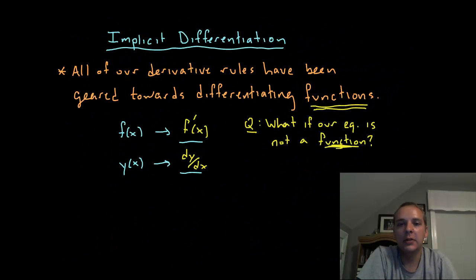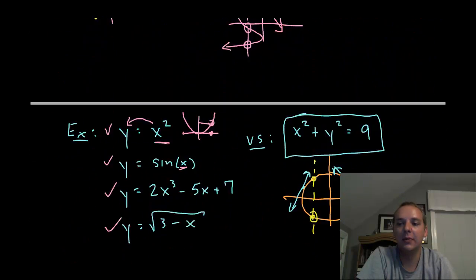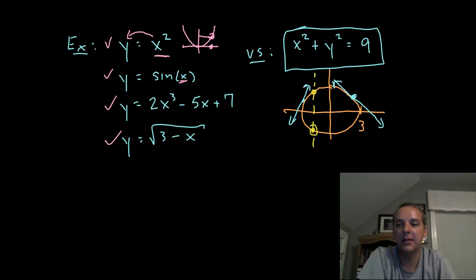Well, the answer is implicit differentiation. Not explicit, not your normal traditional rules—implicit differentiation. This is for equations that are written implicitly, implicitly in terms of x and y.